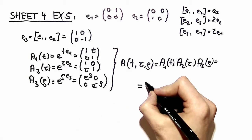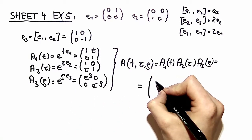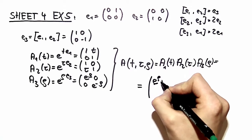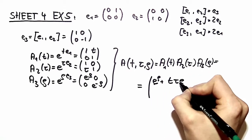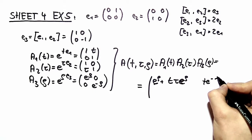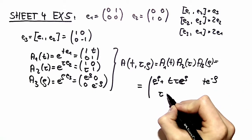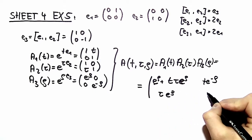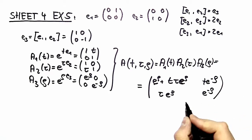those matrices together and you arrive at e to the rho plus t tau, e to the rho t, e to the minus rho tau, e to the rho, e to the minus rho. And this is your solution.